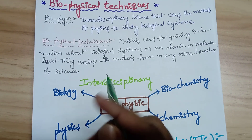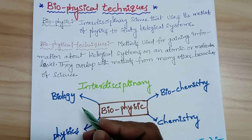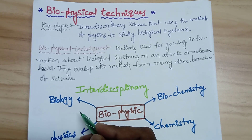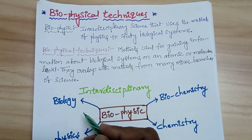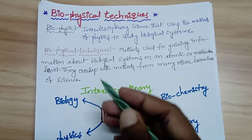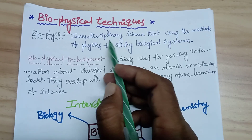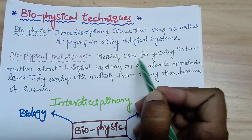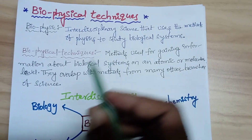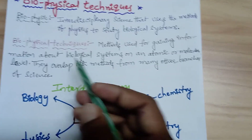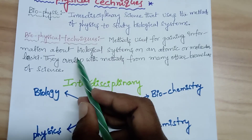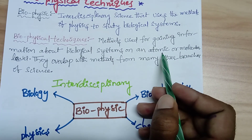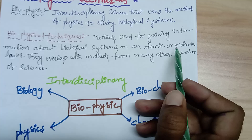Hello everyone, welcome to today's lecture on types of biophysical techniques. We are going to discuss about biophysical techniques. Biophysics is the interdisciplinary science that uses the methods of physics to study biological systems. Biophysical techniques are methods used for gaining information about biological systems on an atomic and molecular level.